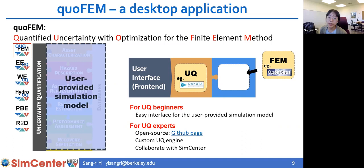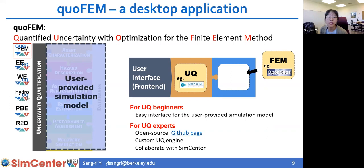For UQ experts, quoFEM can still be useful. It is open source software, so you can download the source code from GitHub and modify it for more freedom. There is also a capability to have a custom UQ engine, allowing you to plug in your own UQ algorithm. The benefit is that you can share this module with other quoFEM users, and it can be extended to combine your UQ algorithm with hazard modeling capacity in other tools, potentially being shipped into the released version of quoFEM.